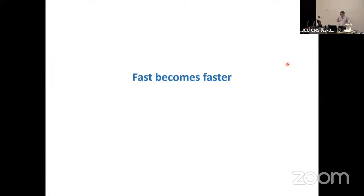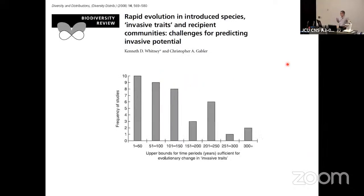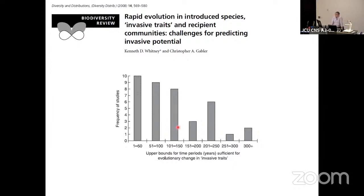Now we go to the next phase: fast become faster. Invasive species are known to develop rapid adaptations very quickly. This figure shows the number of studies giving the upper bound for years sufficient for at least some evolutionary adaptive change to be recorded — for a high number of studies it's less than 50 years, and probably more than 50 percent of the studies need less than 100 years for adaptive evolutionary changes to occur when plants are introduced into a new region with different environmental conditions.